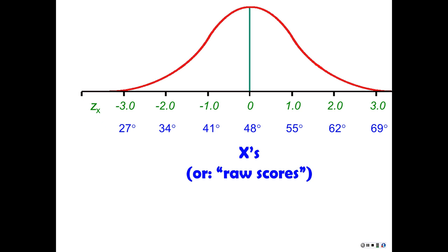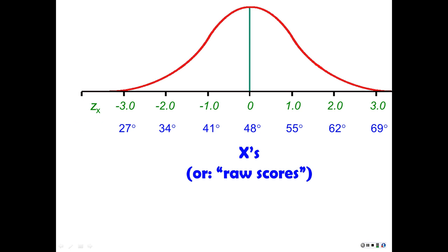Let's say these are average temperatures at a relatively cold place — mean of 48 degrees, standard deviation of 7 degrees. One standard deviation above the mean is 55, two standard deviations is 62, and so on. Going down, one standard deviation is 41 degrees. So a Z-score of negative 1.0 in this distribution corresponds to 41 degrees.